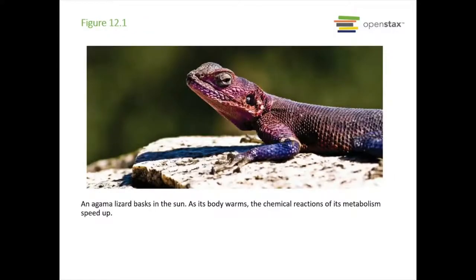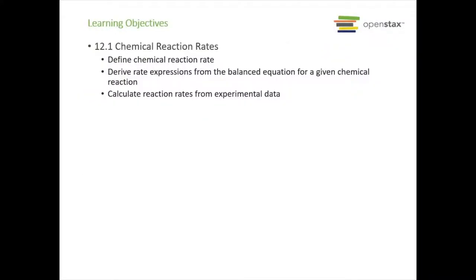To start the chapter, we have this picture of the agama lizard basking in the sun. Lizards do this because the heat from the sun warms up their blood so they can move faster — it helps the chemical reactions in the body make muscles move more rapidly at higher temperatures. Cold lizards are slower and easier meals for predators. We're going to open up with section 12.1, Chemical Reaction Rates.